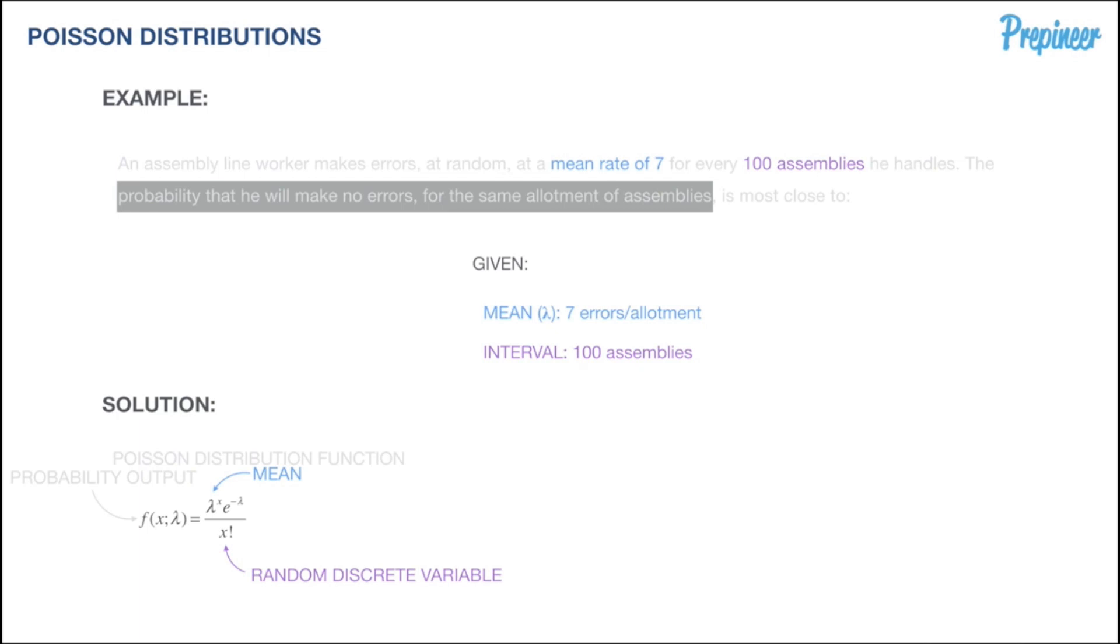In future problems, when they're not equal, some work needs to be done. But in this case, we're looking for the probability that he will make no errors for the same allotment of assemblies, so our interval is 100 assemblies. Our random variable x is 0 errors, and we're looking for that probability output. There's our Poisson distribution function.